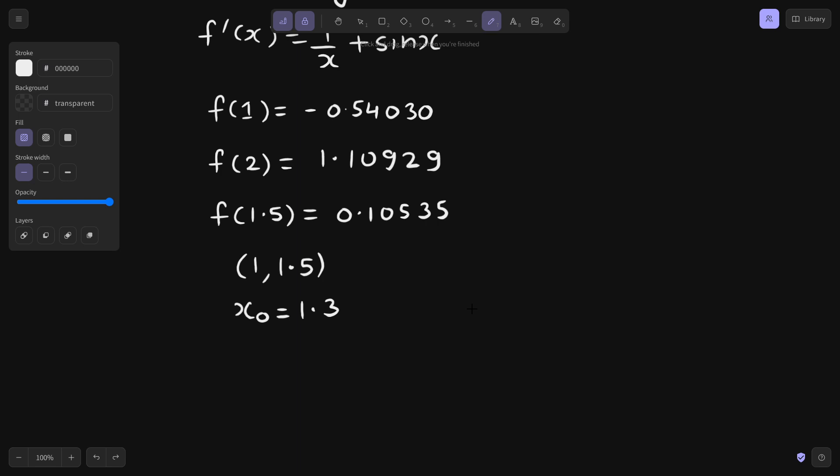There is another way. You can either choose the value in which the output is more closer to 0. Look at f of 1, 0.5, f of 1.5, 0.1. Here f of 1.5 is closer to 0, just 0.1 units. So you can take this also as x0.